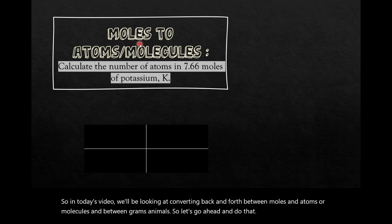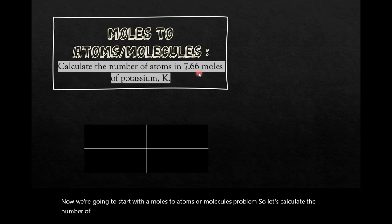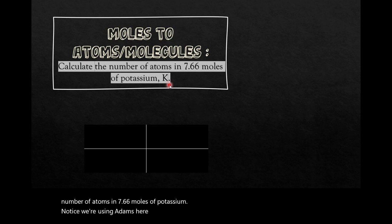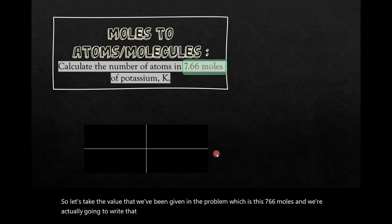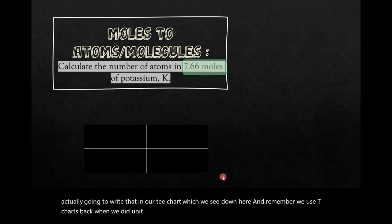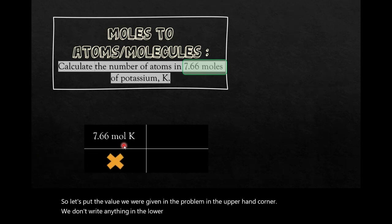Now we're going to start with a moles to atoms or molecules problem. So let's calculate the number of atoms in 7.66 moles of potassium. Notice we're using atoms here because we're talking about potassium, which is just an element. So let's take the value that we've been given in the problem, which is this 7.66 moles. And we're actually going to write that in our t-chart, which we see down here. And remember, we used t-charts back when we did unit conversions last semester. So let's put the value we were given in the problem in the upper left-hand corner. We don't write anything in the lower left-hand corner, so I put an X there. Now how do we go from moles to atoms?